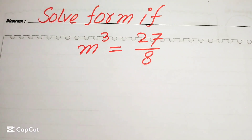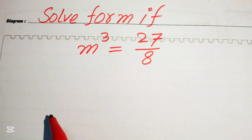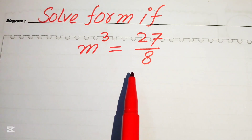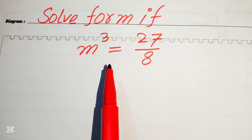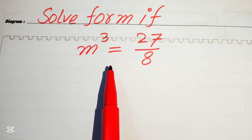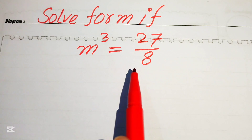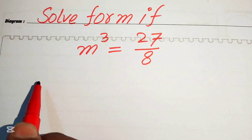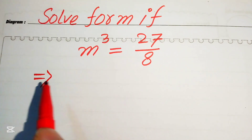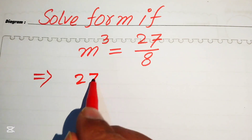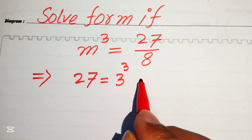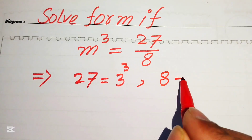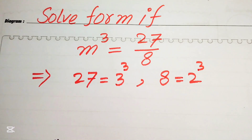Hello everyone, welcome. Solve this nice cubic equation for the value of m. We have m³ = 27/8, and we will find all three roots of this equation. The first step is to focus on the right-hand side: we write 27 as 3³ and 8 as 2³.